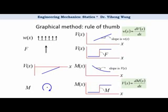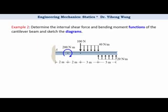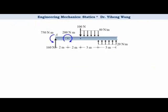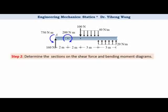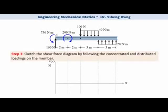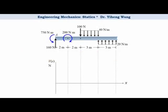Now let's look at another example and use the graphical method to sketch the shear force and bending moment diagrams. For this example, the first step is to determine all the external loadings, including all the support reactions, and complete the free body diagram of this member. Now the free body diagram is complete. The second step is to determine how many sections we should have on the diagrams — we should have a different section whenever the loading situation changes. Step 3: we start with the shear force diagram, working from left to right. There is a 160 N concentrated load at point A, so on the diagram there is a step change.